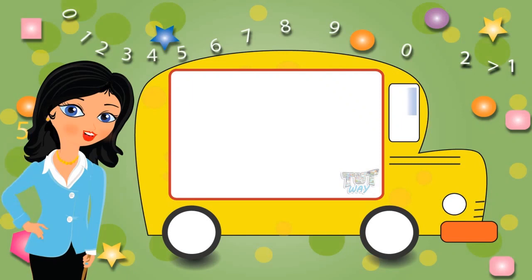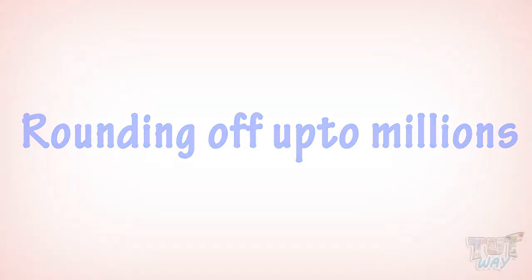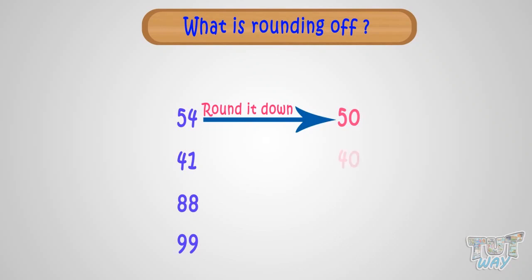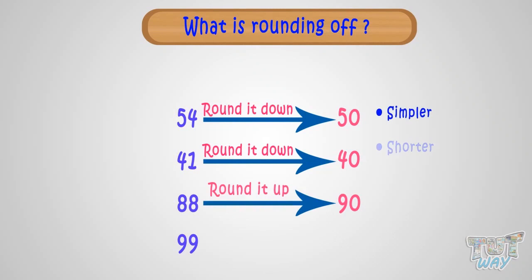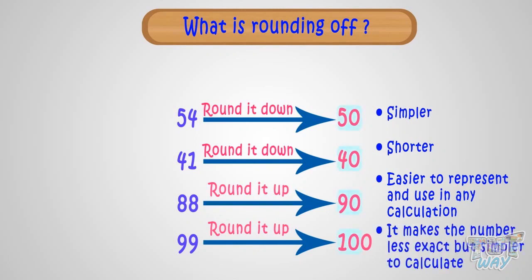Hi kids! Today we will learn rounding off up to millions. So first of all, what is rounding off? Rounding is to replace a number with another one that has a value approximately equal to the original number, but is simpler, shorter, and easier to represent and use in calculation. It makes the number less exact but simpler to calculate.